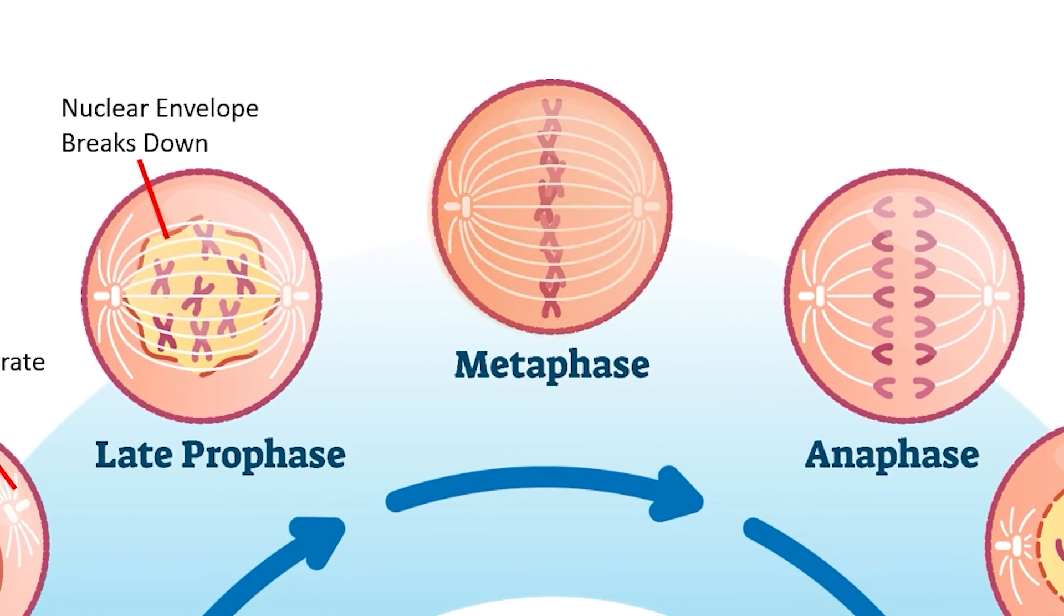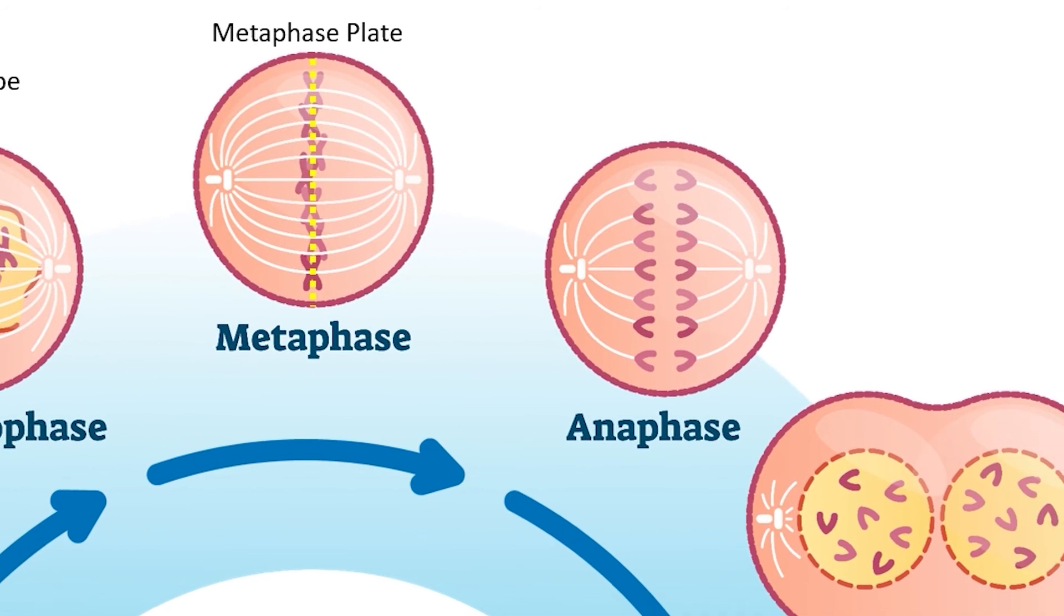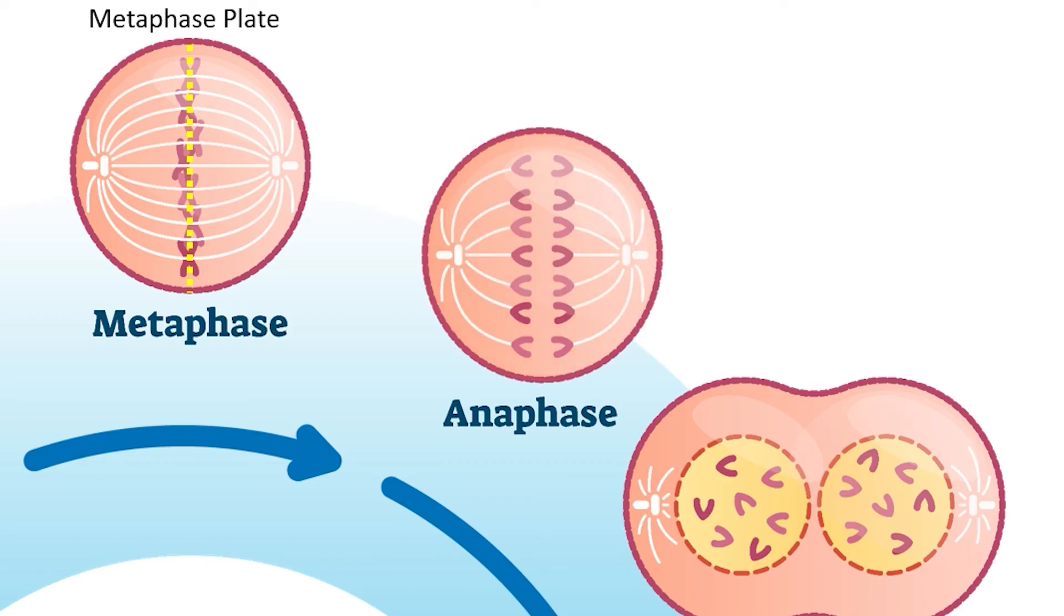During metaphase, the chromosomes line up on the metaphase plate where the sister chromatids of each chromosome begin to separate. As the cell enters anaphase, each sister chromatid fully separates into an individual chromosome, and the chromosomes are pulled to either pole of the cell.